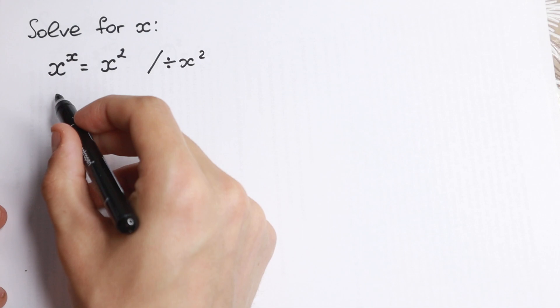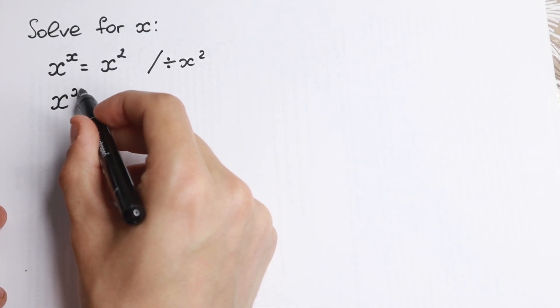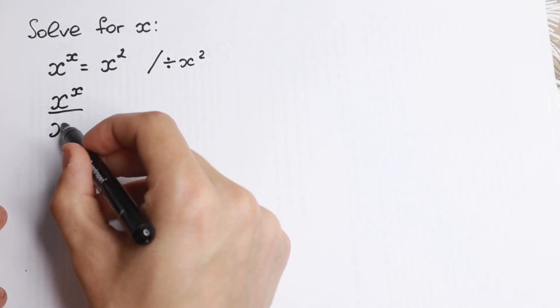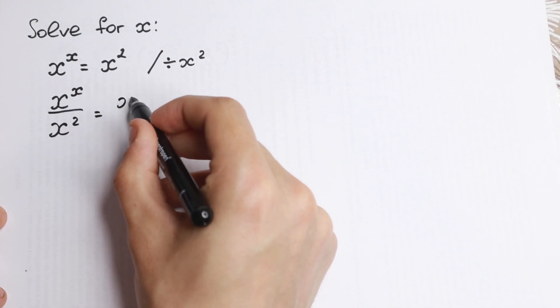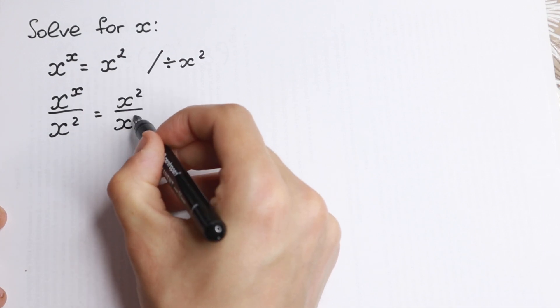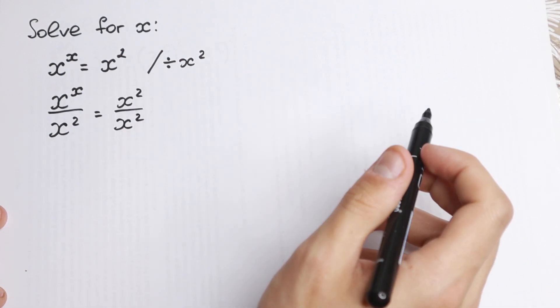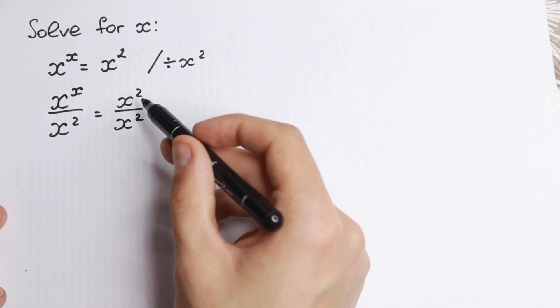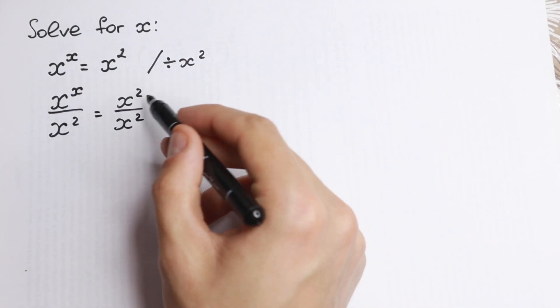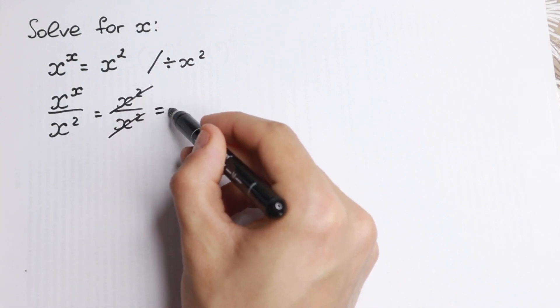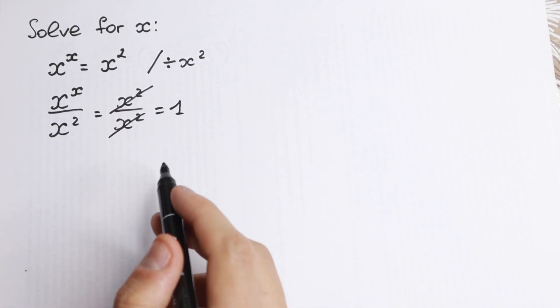If we divide both sides by x square, right here on the left hand side we have x to the power x all over x square equal to x square over x square. On the right hand side we divide the same element, same denominator. So we can easily cancel it and we will have equal to 1 as a result.